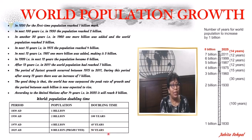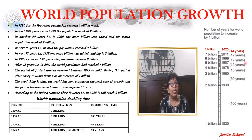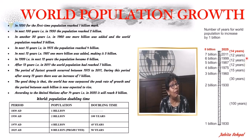If you see the bar carefully, you will find that the doubling time of the world population was reducing fast until 1975. Now, the doubling time of the world population will keep on increasing.